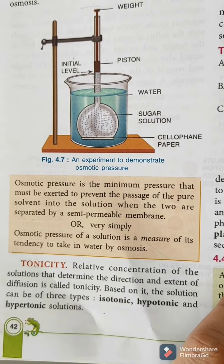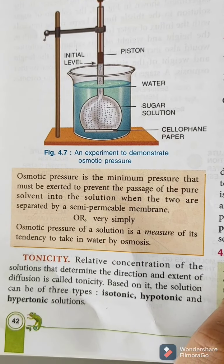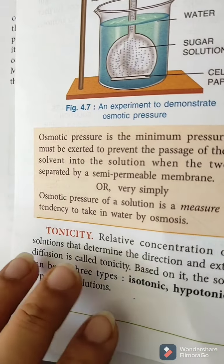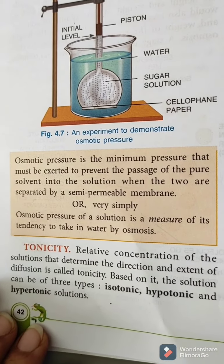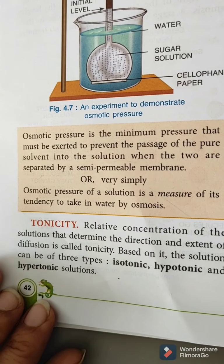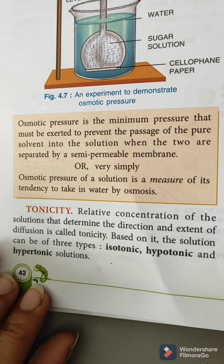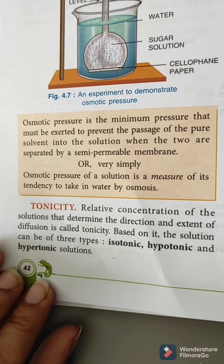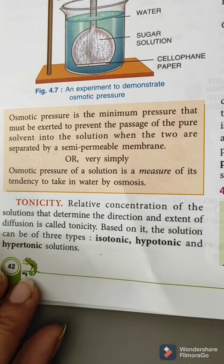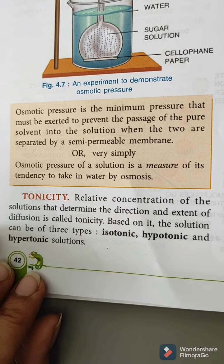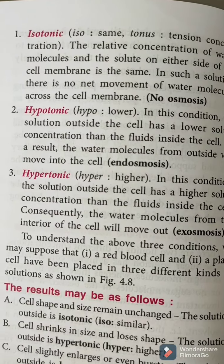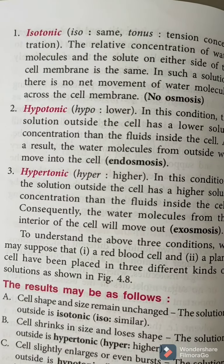Read the definitions given carefully. The next topic is tonicity. The relative concentration of a solution that determines the direction and extent of diffusion is called tonicity. Comparing the concentration of two different solutions, we have three types: isotonic solution, hypotonic solution, and hypertonic solution.